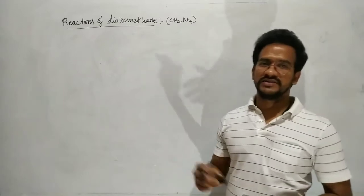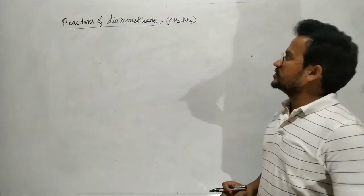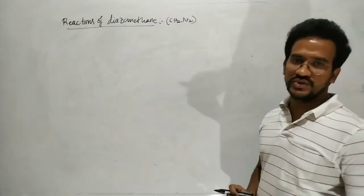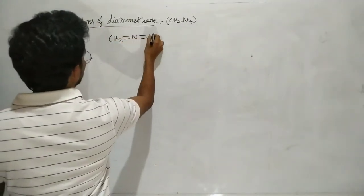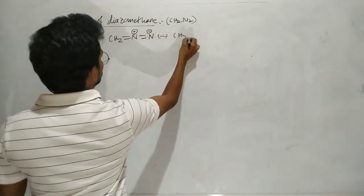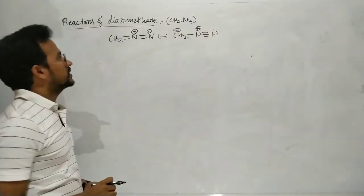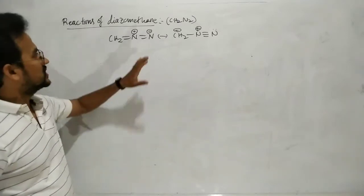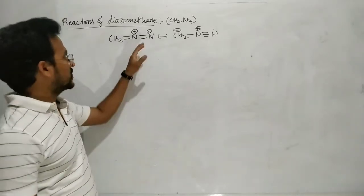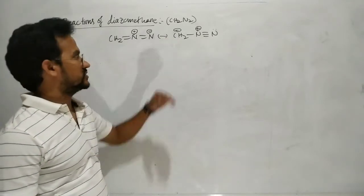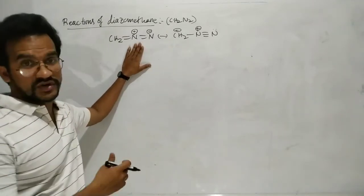Hello students. In this video let us discuss reactions of diazomethane. Diazomethane means CH2N2. The structure is CH2=N⁺=N⁻, with one resonance structure carrying a positive charge on nitrogen and negative on carbon, and another with negative on nitrogen and positive on carbon. The resonating structure where the more electronegative nitrogen carries the negative charge is the more stable one.